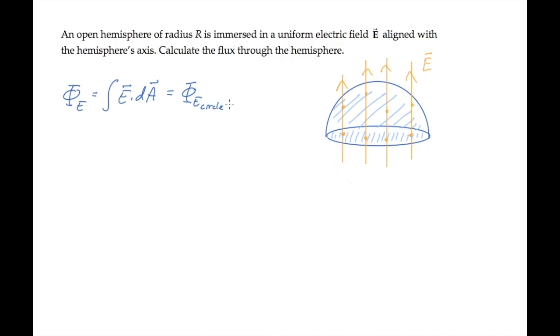That flux we can calculate easily because the electric field is constant and normal to the area. So we just get the electric field magnitude times the area of the circle. And that's pi r squared times the electric field magnitude. The magnitude of the flux through the hemisphere also equals the magnitude of the electric flux through the circular bottom.